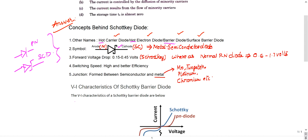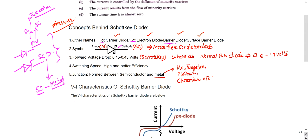Construction-wise, in a normal PN junction diode we have P-type semiconductor and N-type semiconductor — both are semiconductors — and a junction is formed between them. In the Schottky diode, however, there is a semiconductor and a metal. So it's a combination of a semiconductor with a metal, not a true semiconductor-to-semiconductor diode.